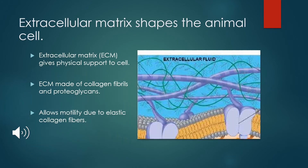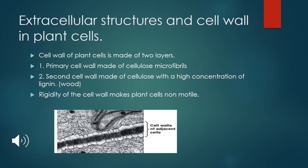The extracellular matrix, or ECM, is the extracellular structure that provides support to the cells of animal organisms. It consists primarily of collagen fibrils and proteoglycans. Animal cells are not encased in rigid walls; instead, they are surrounded by a strong, bi-elastic net, which allows them to be motile. For plant and fungal cells, the extracellular structure is the rigid cell wall, which consists mainly of cellulose microfibrils embedded in a matrix of other polysaccharides and small amounts of protein.